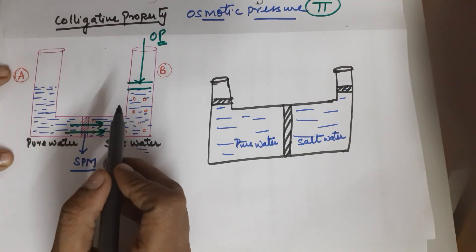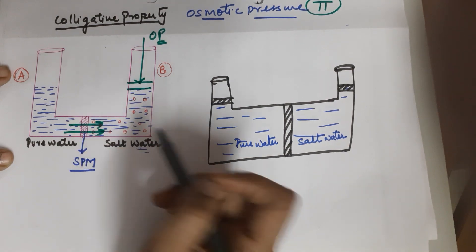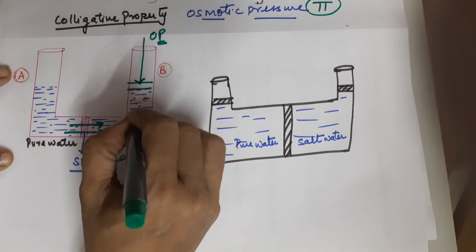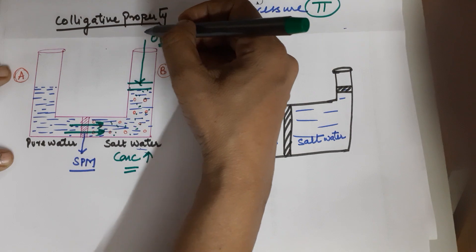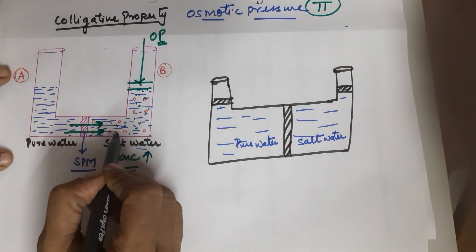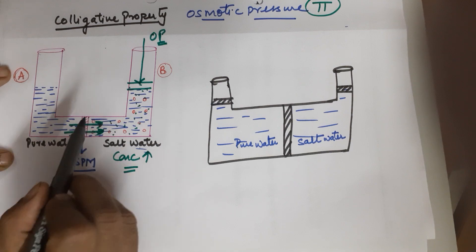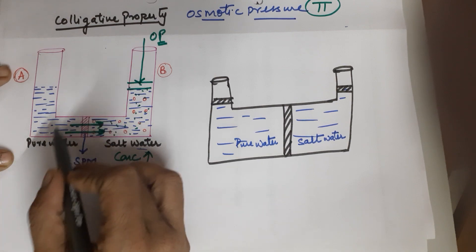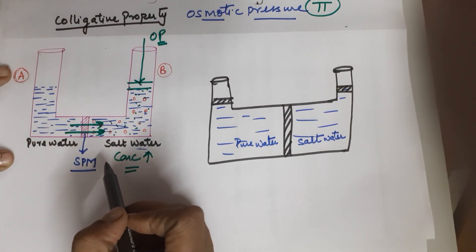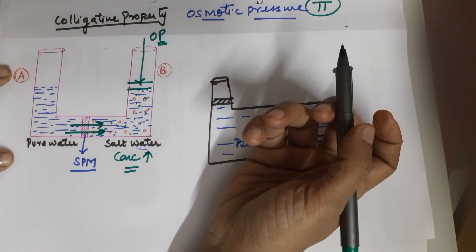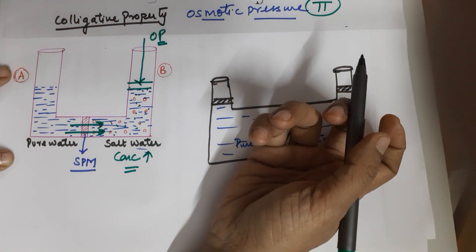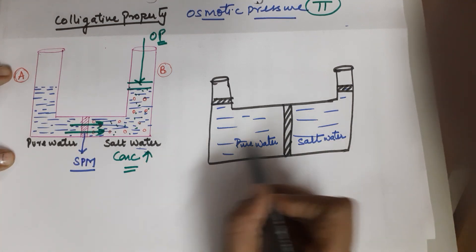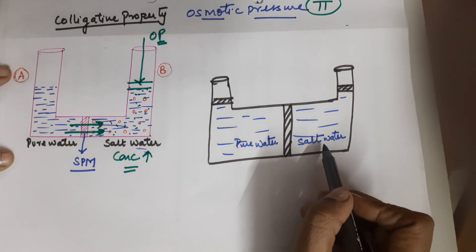If your salt water is more concentrated — if you increase the concentration on this side by adding more salt — then you require more pressure to stop the flow of water. This clearly means the flow of water is faster if the concentration difference is large between the two solutions separated by the semi-permeable membrane. Hence osmotic pressure is dependent on the concentration difference between the two solutions.